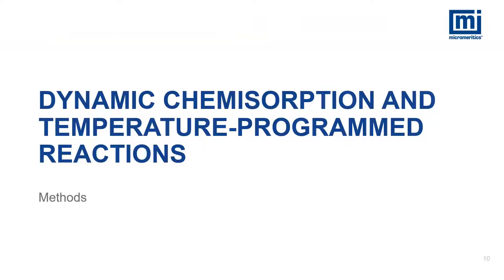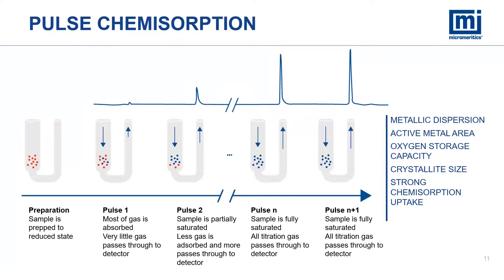Now we will take a look at the dynamic chemisorption and temperature program methods. The first step for pulse chemisorption is to prepare the sample. Samples might be degassed or calcined and then reduced. After the sample is reduced, a steady stream of inert gas flows over the sample. When the baseline is stable, the active gas is injected into the inert gas stream. Any active gas that adsorbs on the sample does not reach the TCD. We can see pulse 1 adsorbs the majority of the active gas, and only a small amount makes it to the detector based on the size of the peak.